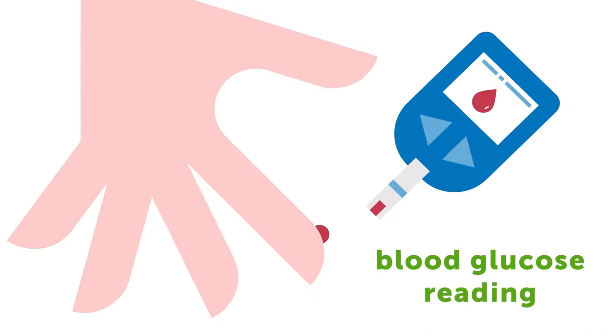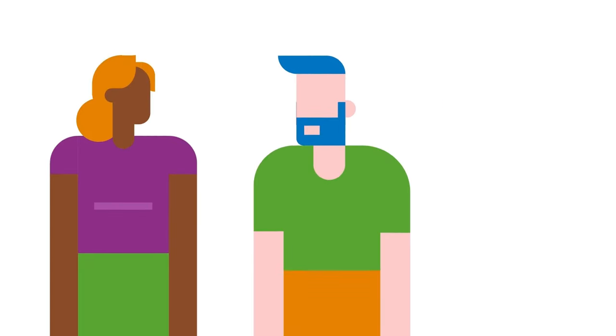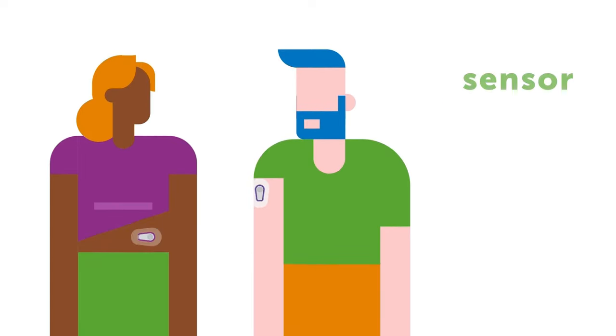When taking a reading from a fingerprick, you are measuring the concentration of glucose in the blood, which is referred to as a blood glucose reading, whereas a CGM sensor is inserted on the back of the upper arm, abdomen,